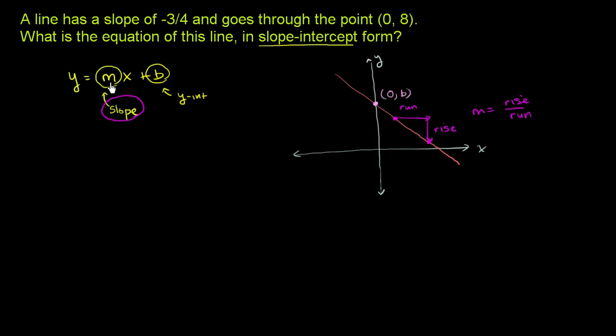And this actually just falls straight out of this equation. When x is equal to 0, let's evaluate this equation. So y will be equal to m times 0 plus b. Well, anything times 0 is 0. So y is equal to 0 plus b, or y will be equal to b when x is equal to 0.